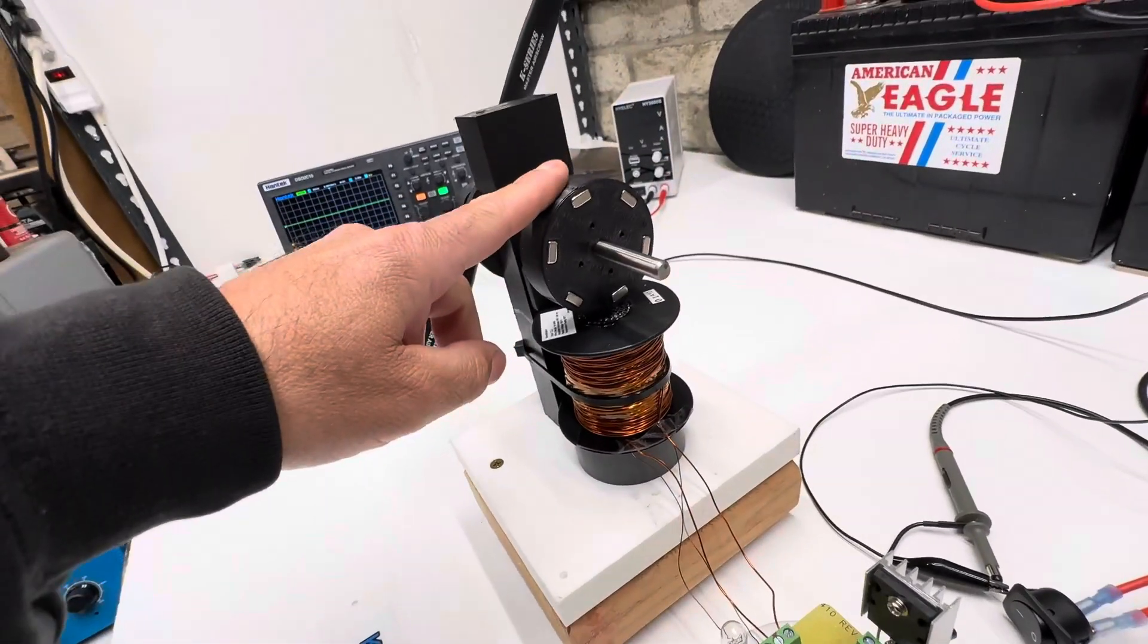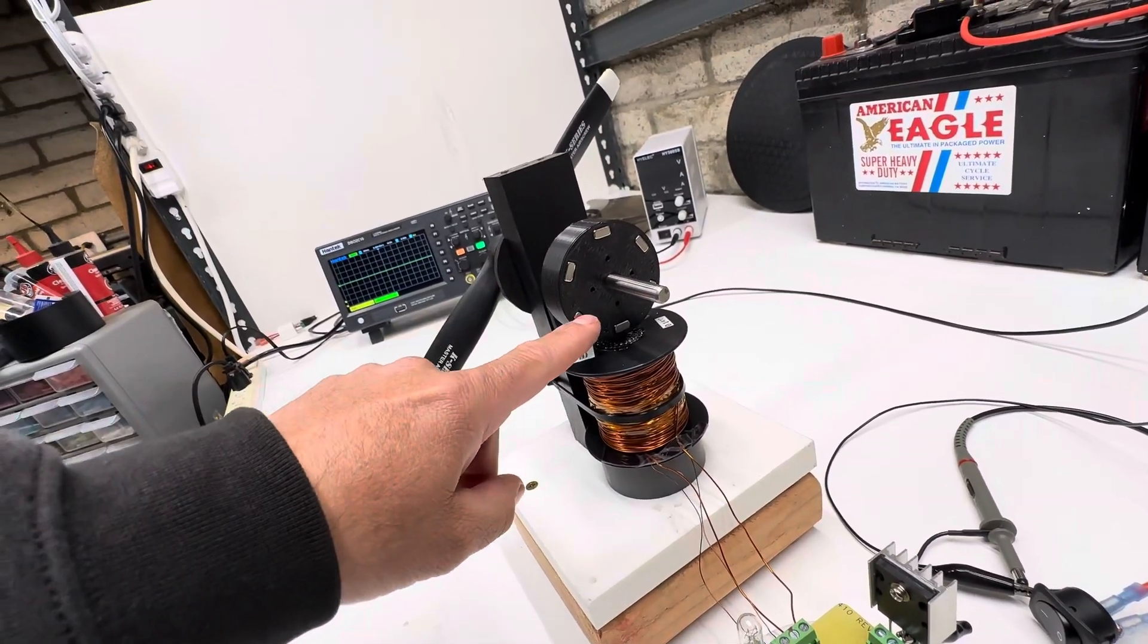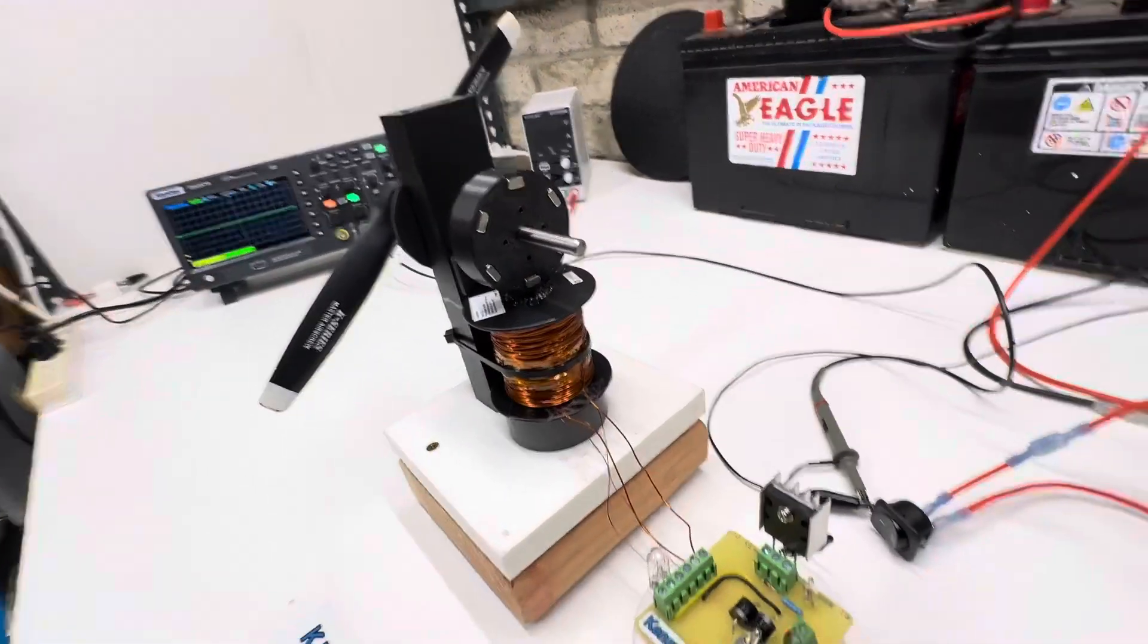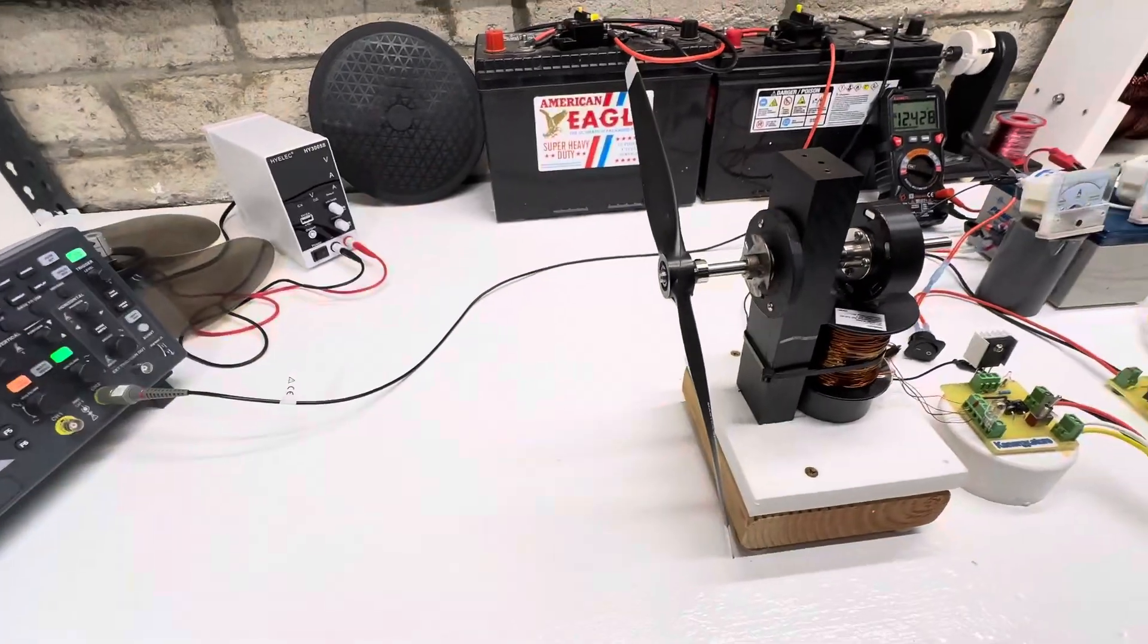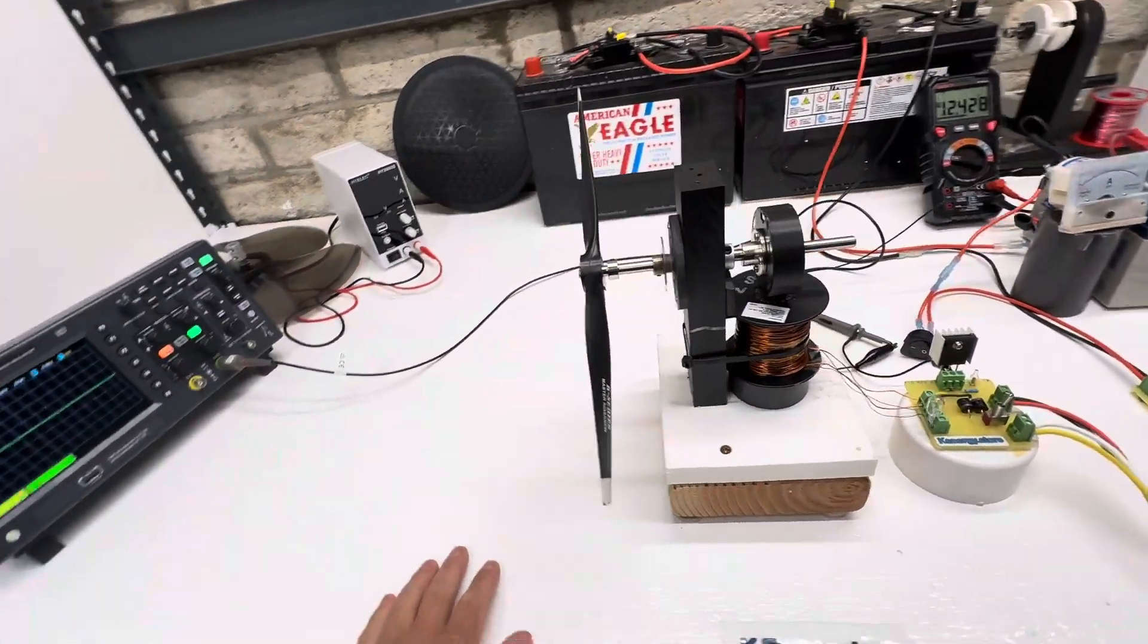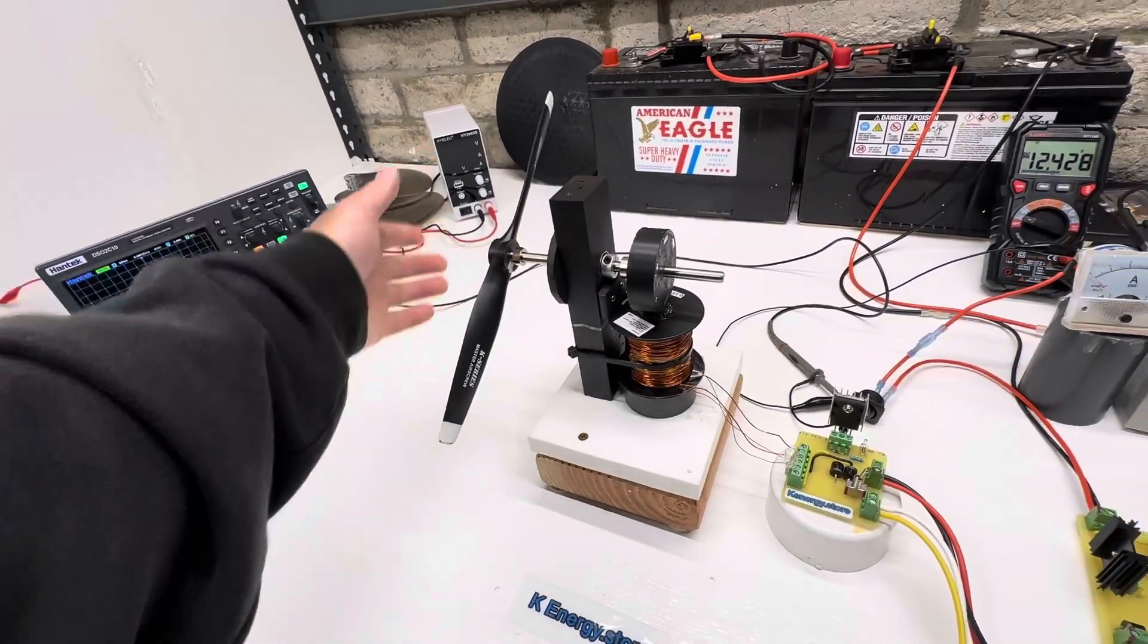And then I have six little neo magnets on this rotor alternating field. So three north pole, three south pole. And then this is just a like eight inch propeller off of a little airplane just to give it some type of a load.